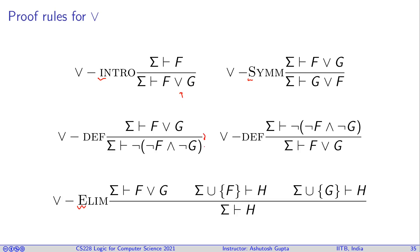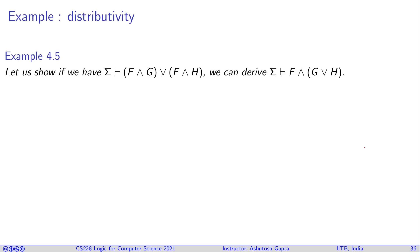The disjunction elimination rule works as follows: suppose you have F ∨ G somewhere and want to eliminate it. If assuming F you can prove H, and assuming G you can also prove the same H, then since you know F ∨ G you can conclude H. This is the case-analysis principle: if both cases lead to the same conclusion, that conclusion holds regardless of which disjunct is true.